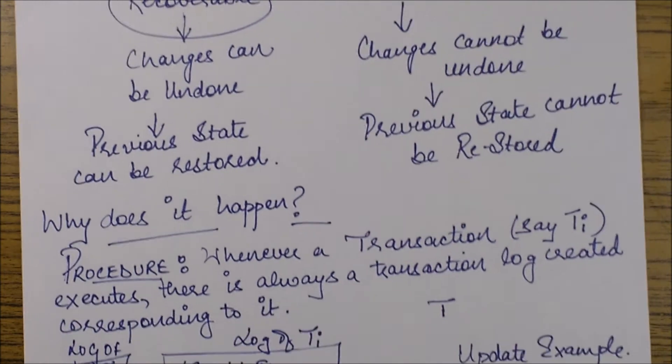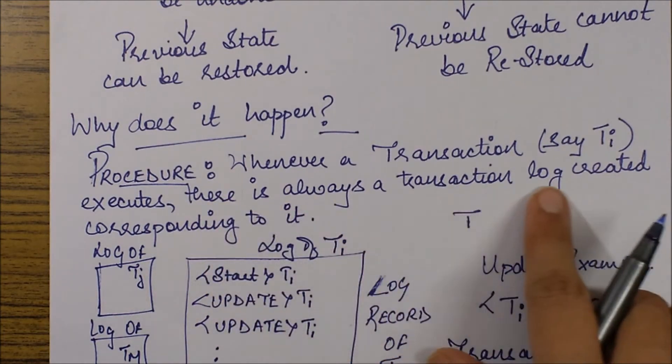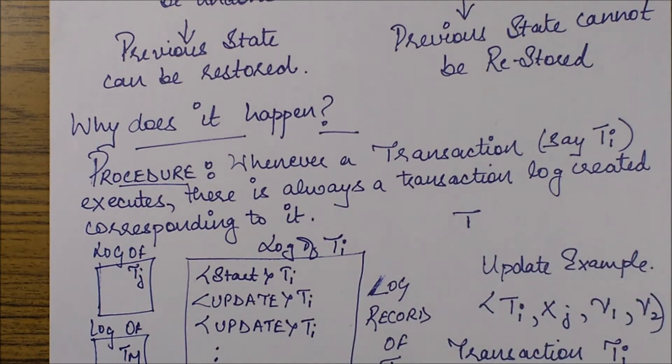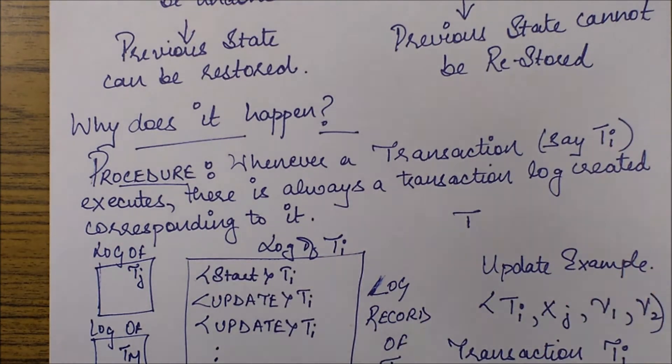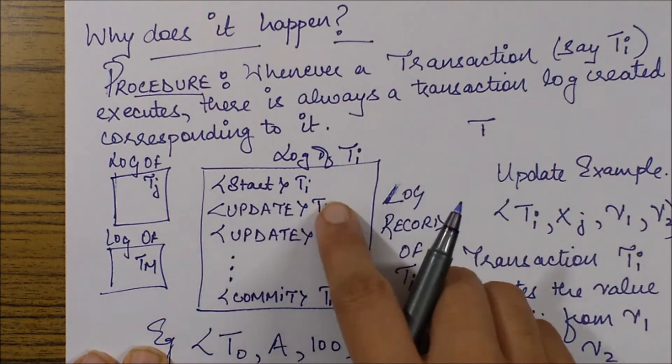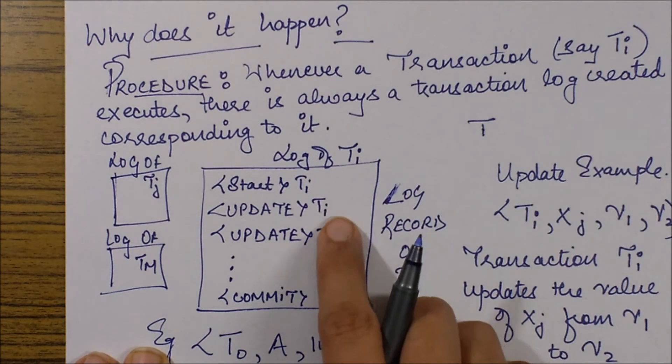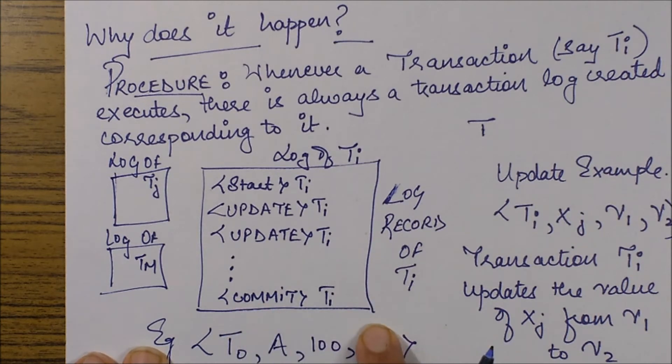Now let's take a deeper insight into it - how does it happen and why does it happen? The procedure is that whenever a transaction Ti executes, there is always a transaction log basically stored as log files into your database. Log files storing various log records corresponding to various transactions are created in this manner: whenever transaction Ti starts you have a start Ti entry, then corresponding to every update or change you make you have an update entry, and finally when the transaction commits you have that commit entry.